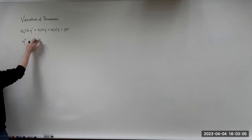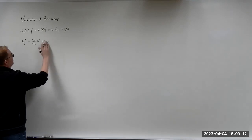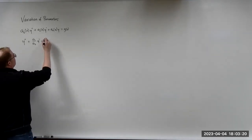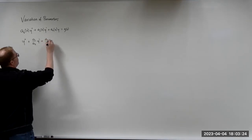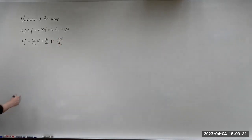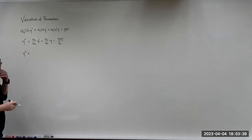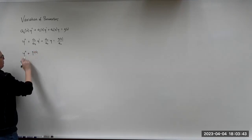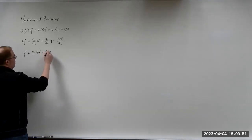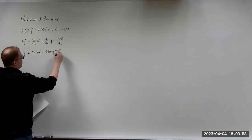I'm going to leave off the X, understanding that those are functions of X — X is our independent variable. This can be written as Y double prime, A1 over A2 — let's call that P of X — plus A0 over A2 — call that Q of X — times Y, equals G over A2, which we'll call F of X.